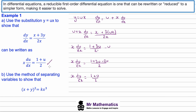Now we need to use a method of separating variables to solve the original differential equation. We put all the u terms on the left hand side and the x terms on the right. We reciprocate the fraction, giving 2 over (1 plus u) du equals 1/x dx, and now the variables are separated.